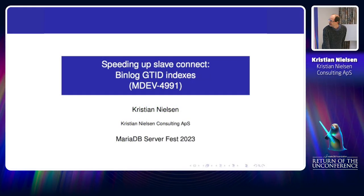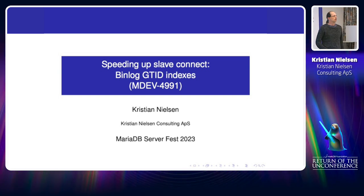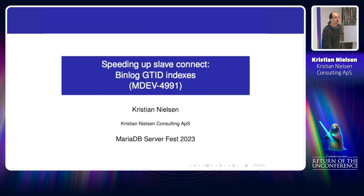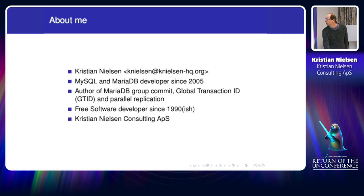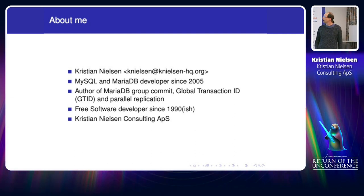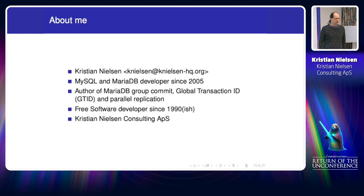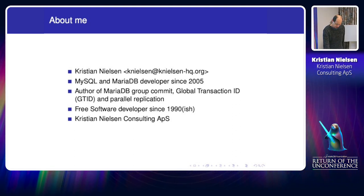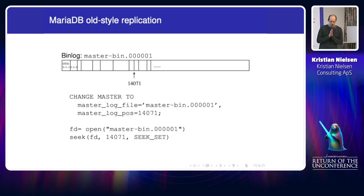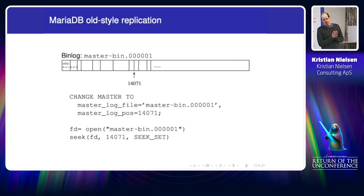I'm here again. If you're here for the first time, this is a short talk about a feature I'm implementing — a fix for an old performance regression in replication from global transaction ID. I'm Christian Nielsen, a long-term MariaDB developer involved in a lot of replication features, and also an independent consultant.